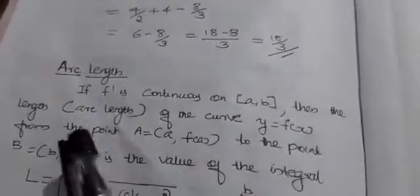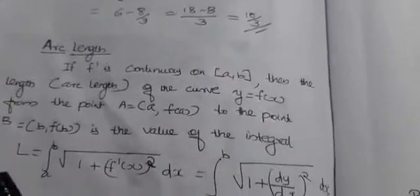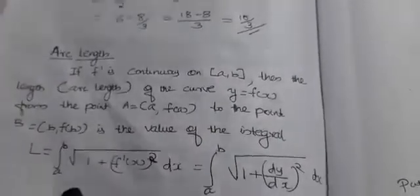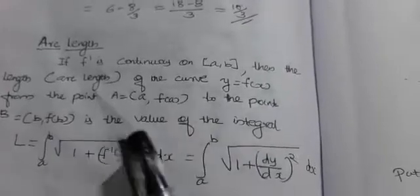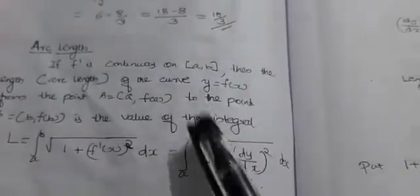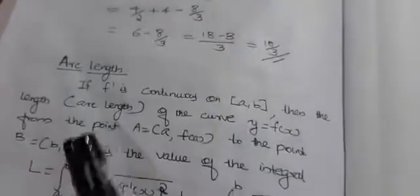Next section: arc length. If f' is continuous on the closed interval [a, b], then the length or arc length of the curve y = f(x) from the point (a, f(a)) to the point (b, f(b)) is given by L = ∫ from a to b of √(1 + [f'(x)]²) dx, which equals ∫ from a to b of √(1 + (dy/dx)²) dx.